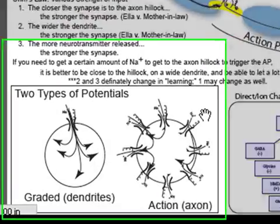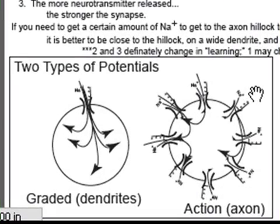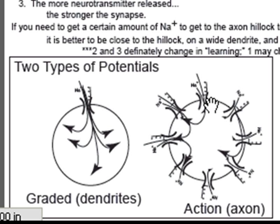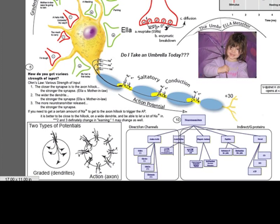Now let's describe the two types of potentials. An action potential is a potential that can move. That's set up by spreading out voltage-dependent channels. Sodium comes in through one channel, spreads to the next channel, and that gate senses the more positive voltage on the inside. So that gate opens and lets sodium come in, which spreads to the next channel. That gate senses the voltage is no longer minus 70 — it's minus 55 — so it opens. You get this jumping from voltage-dependent channel to voltage-dependent channel, and that's really what an action potential is.